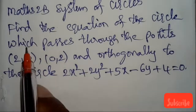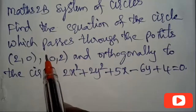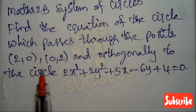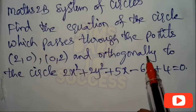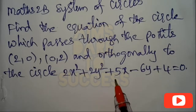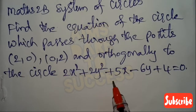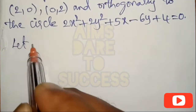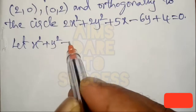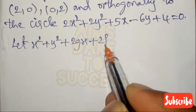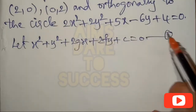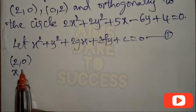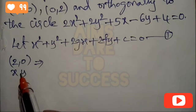This problem is from the system of circles: find the equation of the circle which passes through two points (2, 0) and (0, 2), and cuts orthogonally to the circle 2x² + 2y² + 5x - 6y + 4 = 0. For this type of question, assume the standard equation of the circle x² + y² + 2gx + 2fy + c = 0. Let it be equation 1.